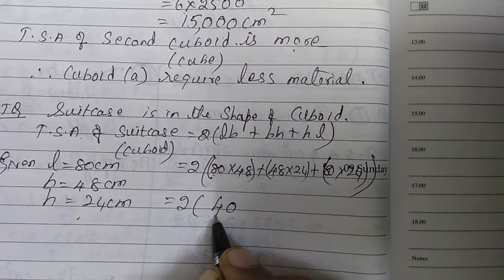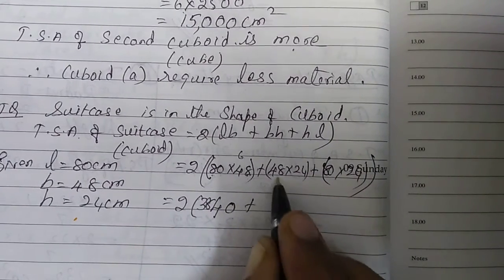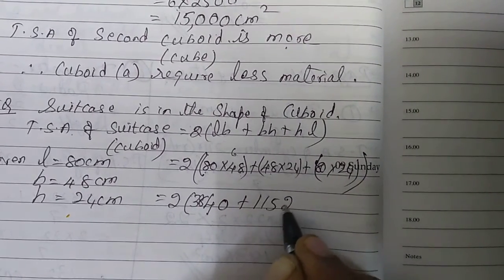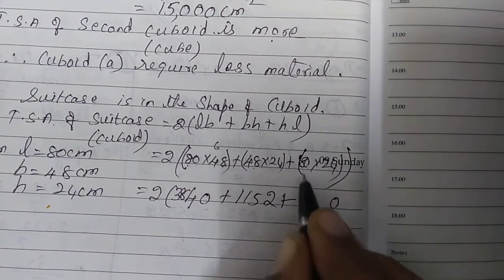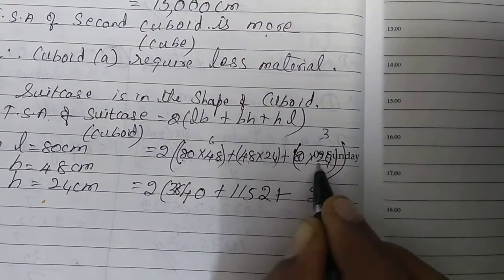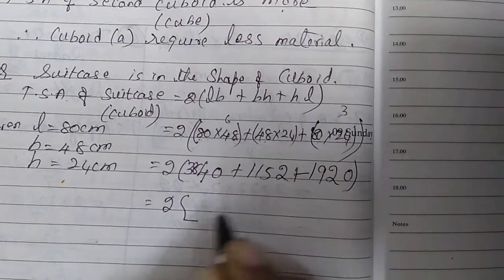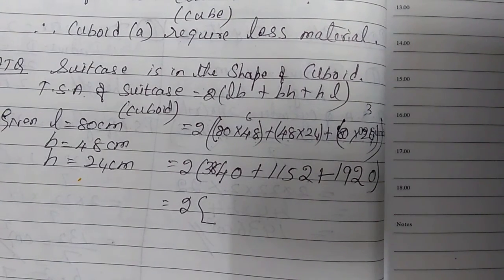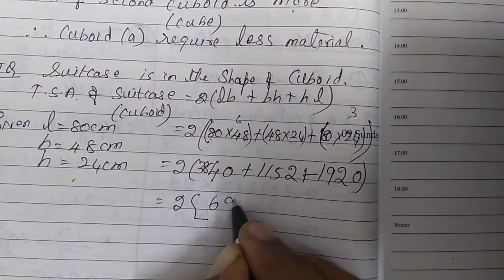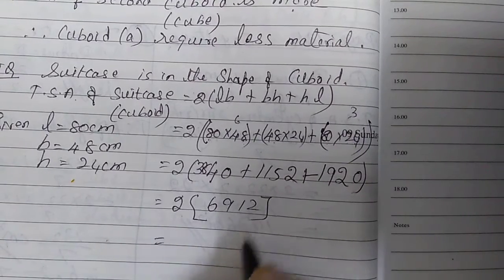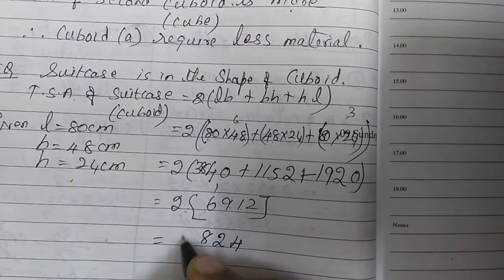Calculating: 80×48 = 3840, 48×24 = 1152, and 80×24 = 1920. Summing: 3840 + 1152 + 1920 = 6912. Multiplying by 2 gives 13,824 cm². So the total surface area of one suitcase is 13,824 cm².